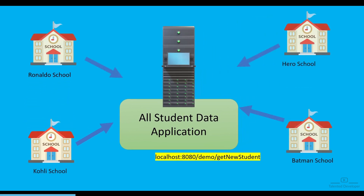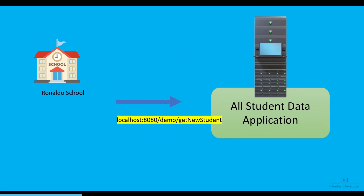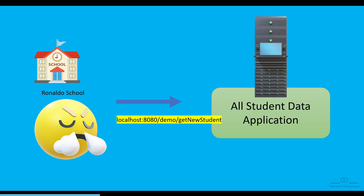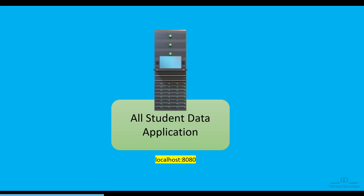Using the same approach, all different schools will also try to find whether any student of their school has signed up or not. So Ronaldo school will keep calling the get new student API — maybe every one minute, or five times within one minute. Sometimes they will get data, sometimes they will not. Maximum chance is they will not get data. So all student data application can also receive multiple unwanted requests from many schools, and most of the responses will just be blank data.